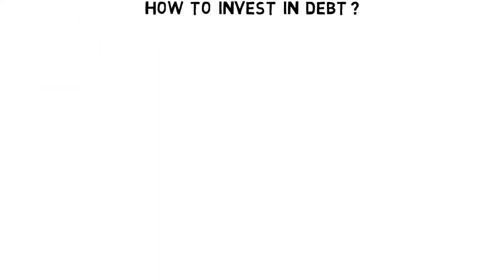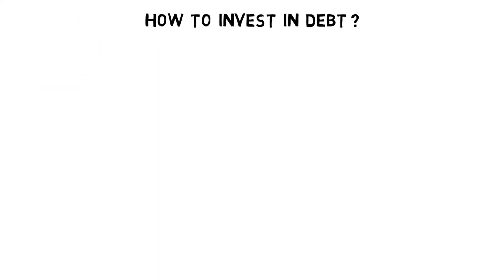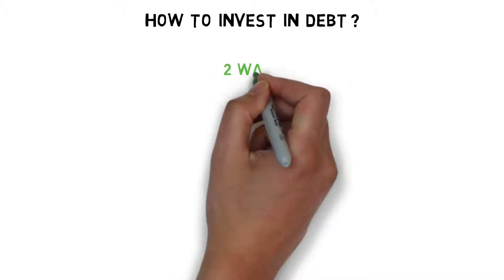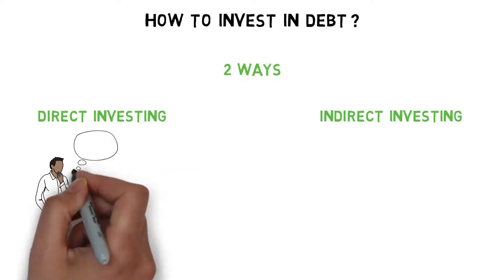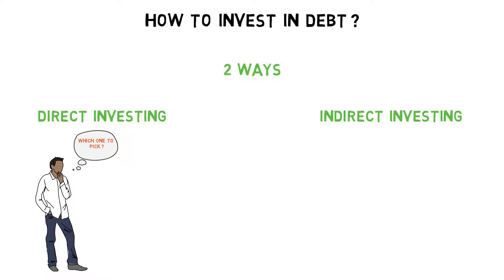Now let's talk about how to invest in debt. So just like stocks, debt में भी invest करने के दो तरीके होते हैं - पहला होता है direct investing and दूसरा होता है indirect investing. Starting with direct investing - direct investing के case में आप खुद bonds को analyze करके एक bond select करते हो अपने लिए, and खुद ही उसमें invest करते हो, अपने Demat account के through, without taking any kind of help from any third party. Let me show you कि आप यह कैसे कर सकते हैं.